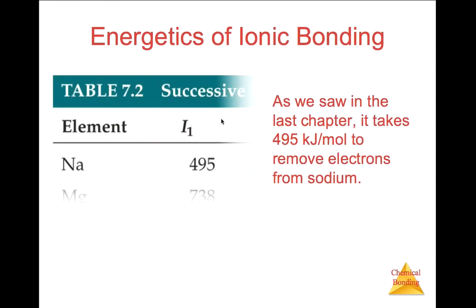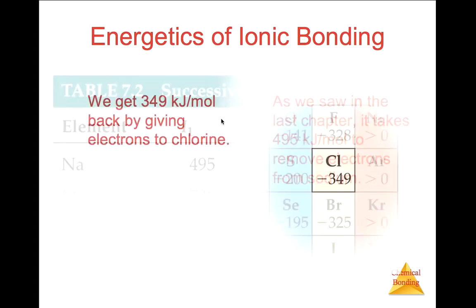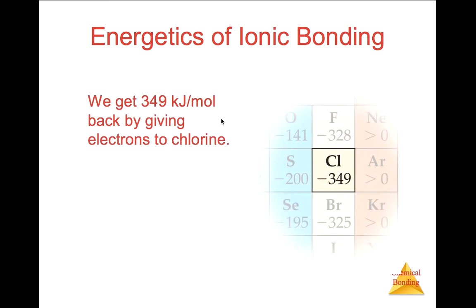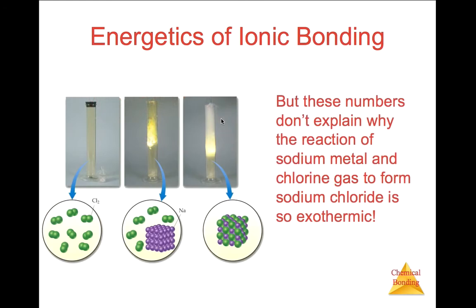Ionic bonding. Ionic bonds usually occur between a metal and a non-metal, or a metal and a polyatomic ion, or two polyatomic ions. As we saw in the last chapter, it took a certain amount of energy to remove electrons from the metal sodium, and a certain amount of energy would be given back by giving electrons to chlorine. These numbers, being fairly equal, don't explain why the reaction of sodium metal and chlorine gas, when they form an ionic bond, would give off very much energy. It's a very exothermic reaction. Here's some chlorine, here's some sodium in this crystal, and then here's what it makes — sodium chloride. You can see it's kind of an explosion; it gives off a lot of energy when those two react.